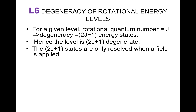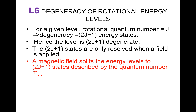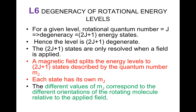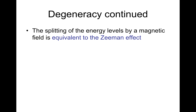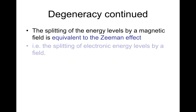The 2j plus 1 states are only resolved when a field is applied. A magnetic field splits the energy levels to 2j plus 1 states described by the quantum number mj. Each state has its own mj, and the different values of mj correspond to the different orientations of the rotating molecule relative to the applied field. The splitting of energy levels by a magnetic field is equivalent to the Zeeman effect we saw in atomic spectroscopy, i.e., the splitting of electronic energy levels by a field.